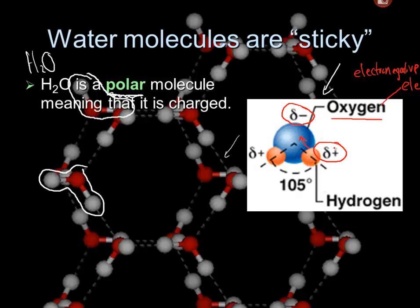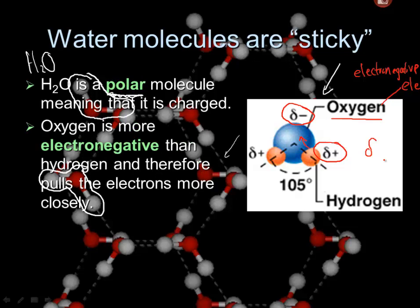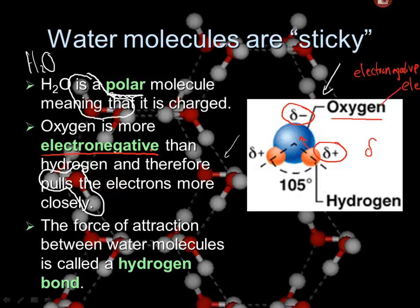Partial negative on the oxygen and partial positives. That's a delta sign. It looks kind of like a little musical note. Partial negative, partial positive. So we have these partial charges here. That's what makes it polar. Polar, as we'll see in a little moment, it means it's good at interacting with other substances that are also polar. So there it is. Oxygen is more electronegative than hydrogen. Therefore, pulls electrons more closely. The force of attraction between these water molecules is called a hydrogen bond.